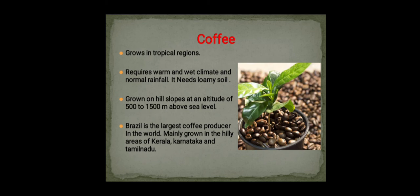Coffee is a crop that grows in tropical regions, requiring a warm and wet climate with normal rainfall. It needs loamy soil and grows on hill slopes at an altitude of 500 to 1500 meters above sea level. Brazil is the largest producer of coffee in the world. In India, it mainly grows in the hilly areas of Kerala, Karnataka, and Tamil Nadu.